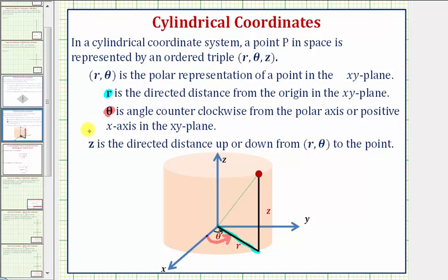And finally, z is the directed distance up or down from r, theta to the point, which would be this directed distance here. So going back to our example.